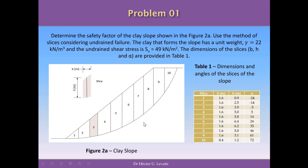Let's resolve this slope stability problem. We have a clay slope and we need to determine the safety factor using the method of slices. The clay has a unit weight of 22 kN per cubic meter and an undrained shear strength of 49 kN per square meter. The conditions are undrained. The dimensions of the slices are provided in a table — we have 10 slices in total, with the width, average height, and base angle of every slice given as data.